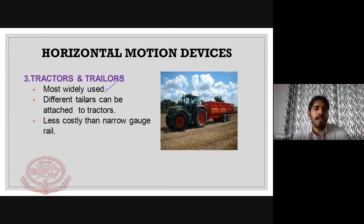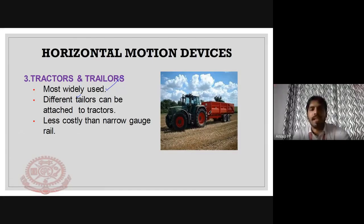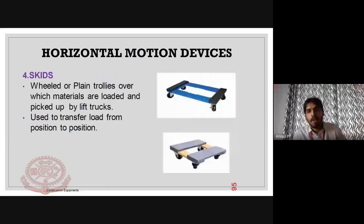Tractors and trailers are the most widely used horizontal motion devices. Trailers can be attached to tractors and are less costly than narrow gauge railroads. The tractor provides the pulling force while the trailer carries the load.